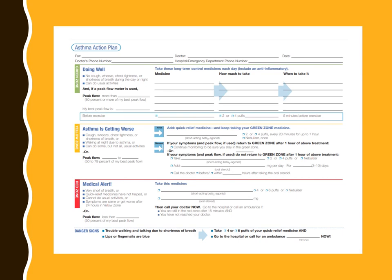The asthma action plan uses a green, yellow, and red zone system. Green means the child is doing well — providers list medications for their well times. In the yellow zone, medications are added. In the red zone, more medications are added. As the child improves, they move back from red to yellow to green, where medications are reduced.